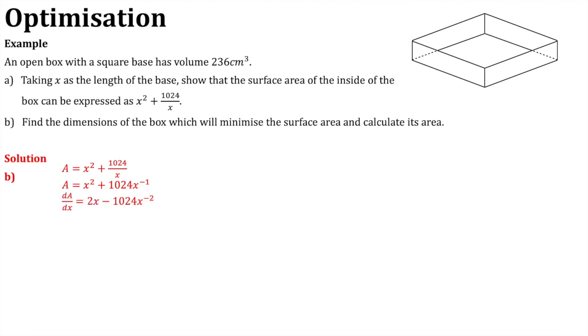This is now in a differentiable form. So, dA by dx is going to be equal to 2x minus 1024 x to the power negative 2. Now, I can rewrite this again with positive indices. So, that's 2x minus 1024 over x squared. Now, I know that minimums occur when dA by dx is equal to 0. So, that means that 2x minus 1024 over x squared is equal to 0. Here I can multiply throughout by x squared so that I can eliminate this fraction. So, when I multiply throughout by x squared, I get 2x cubed minus 1024, and 0 multiplied by x squared is still 0. Now, I can start solving this by adding 1024 to both sides and then dividing by 2. And then cube rooting both sides gives me x equals 8 centimeters.